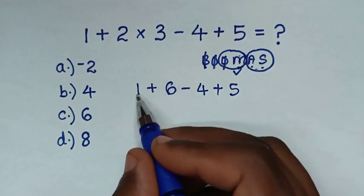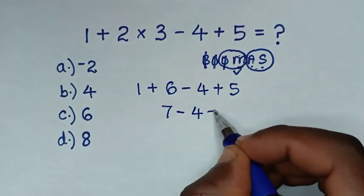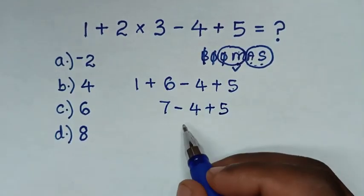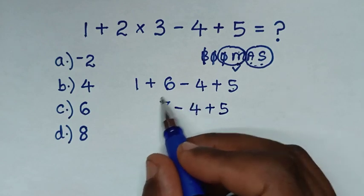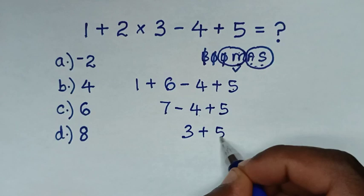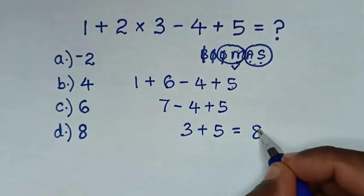So we'll deal with this addition of 1 plus 6 is 7, then minus 4, then plus 5. Then from here, we'll deal with this subtraction. Of 7 minus 4, it is 3, then plus this 5, which is equal to 3 plus 5 is 8.